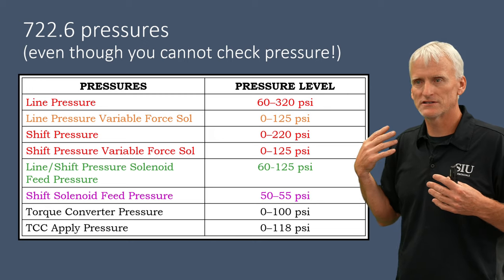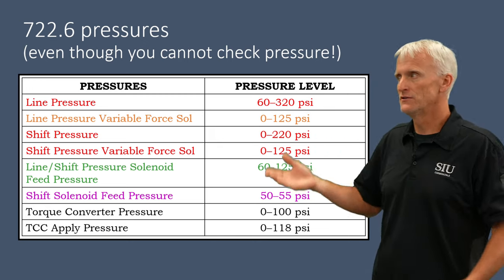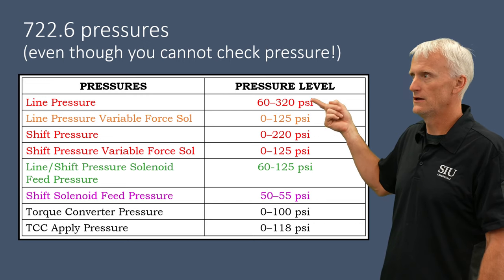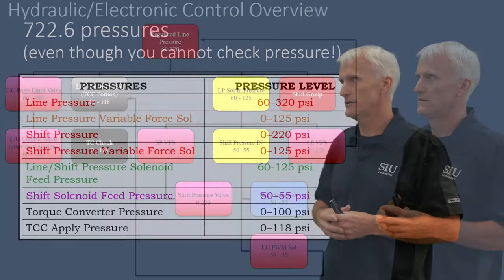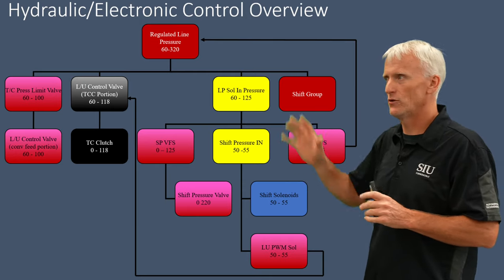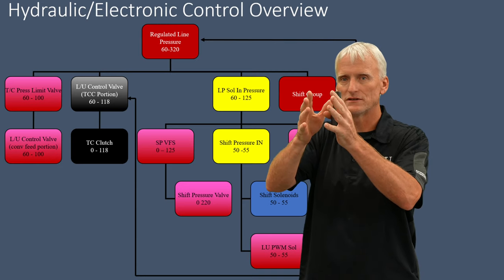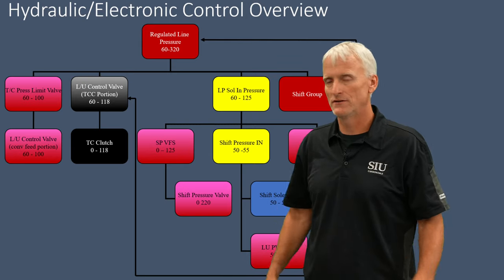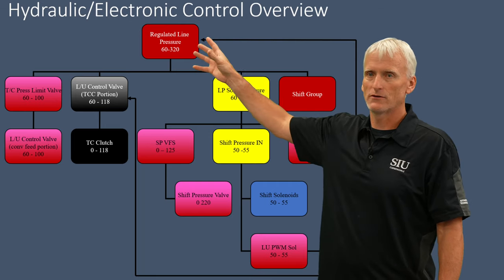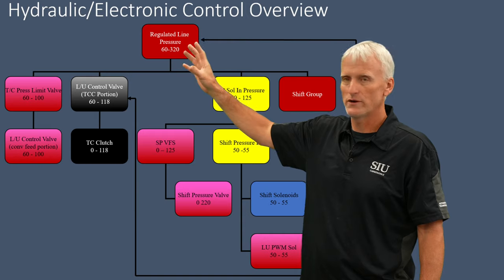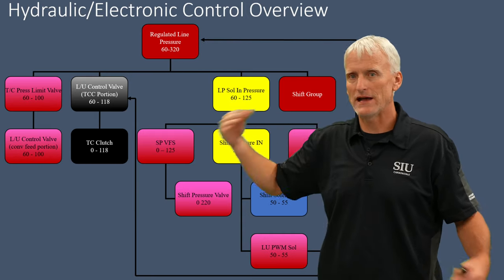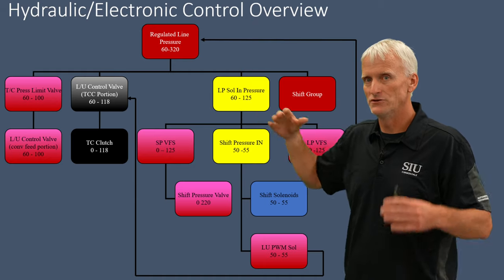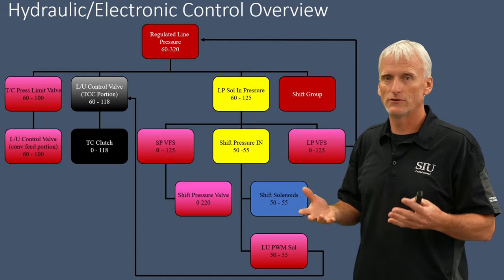The pressure from the solenoids works on their valves to create either the actual shift pressure that clutches shift with — which is between 0 and 220 psi — or they ultimately control line pressure, which goes up to 320 psi. This chart shows how line pressure flows from the pump and gets modified all the way down to the clutches. At the top in dark red is regulated line pressure between 60 and 320 psi — whatever pressure is coming off the pressure regulator is the maximum pressure this transmission has.